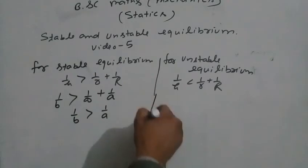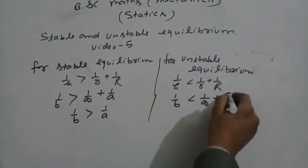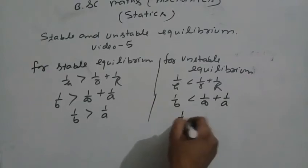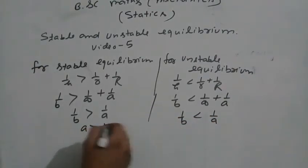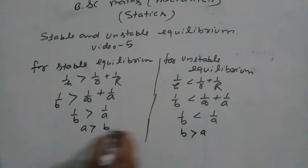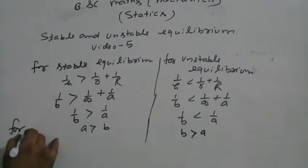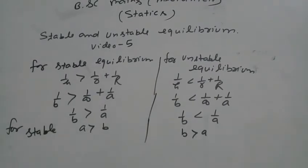We have 1/b less than 1/infinity plus 1/a, which gives 1/b less than 1/a. Rather, a greater than b. We have b is less than a/2 for stable, and b is greater than a/2 for unstable.